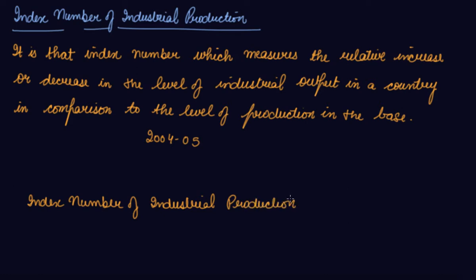The formula is equal to summation RW divided by summation W into 100, where R is your quantity relative. That is the change in the quantity from the base year into 100 and its summation. W is the weight, and you can find out the index number of industrial production from it.